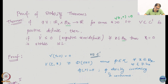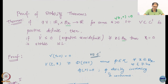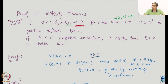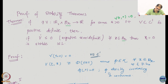Proof of stability theorems: the first one we try to prove is the stability in the sense of Lyapunov result. There exists a V mapping time and states in some ball of radius r to real numbers, such that V(t,0) = 0 for all time, V is a C¹ (once continuously differentiable) function, and positive definite. Then if V-dot is negative semi-definite — less than or equal to 0 — for all x in B_r, we say that 0 is a stable equilibrium in the sense of Lyapunov.